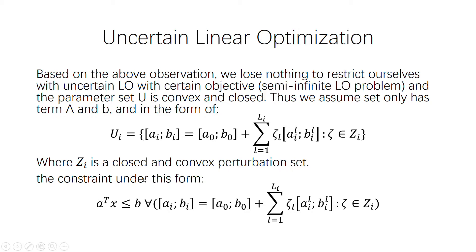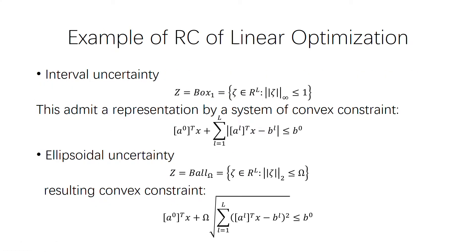After this conversion, the constraint under this form is Ax ≤ b for any parameter of this form. As a simple example for linear optimization, there is an interval uncertainty where the uncertainty set Z is in a box, shown as the infinity norm being less than or equal to a constant of one. This admits a representation as a system of convex constraints — we can see that it is still a linear constraint, so it is easy to solve.